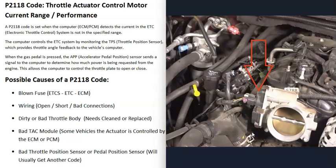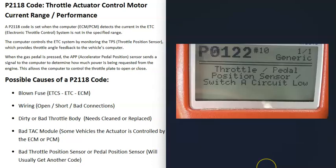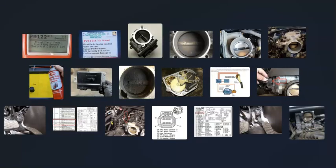The last possible cause is a bad throttle position sensor or bad pedal position sensor. The throttle position sensor is located at the throttle body and the pedal position sensor is at the gas pedal. Usually when one of these goes bad you'll get another code — for example, a P0122 throttle pedal position sensor switch A circuit low — which would point you toward checking that sensor.